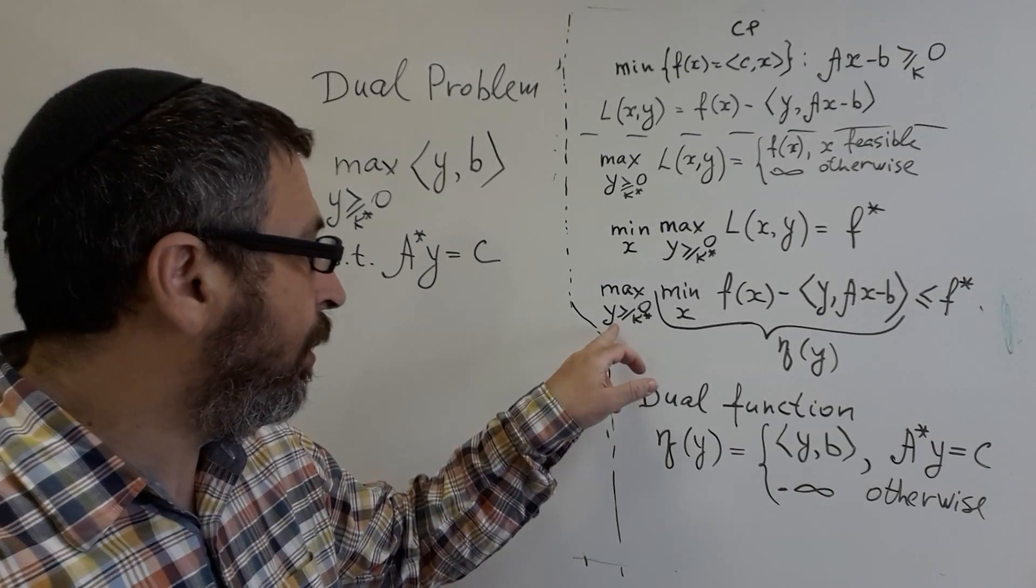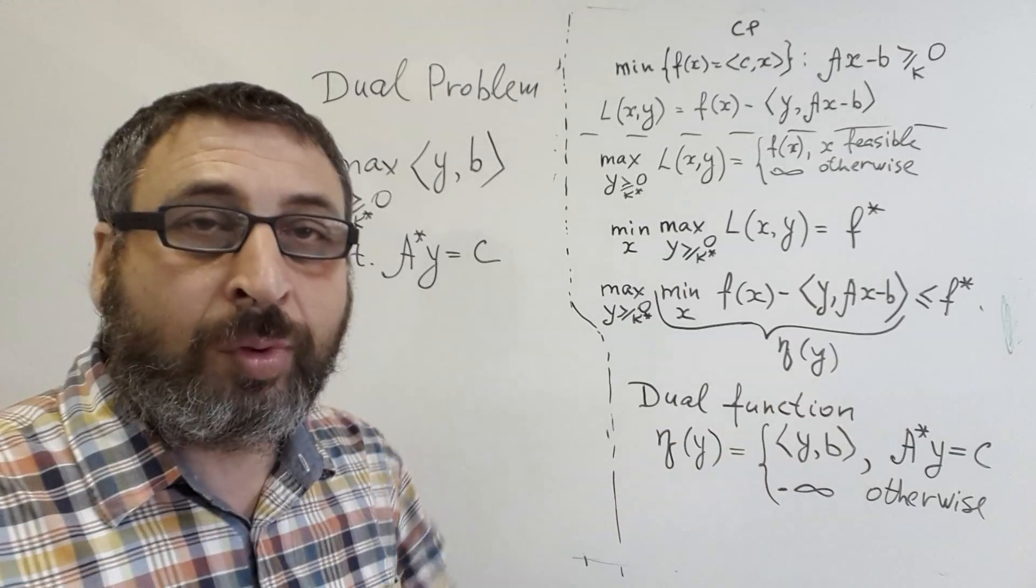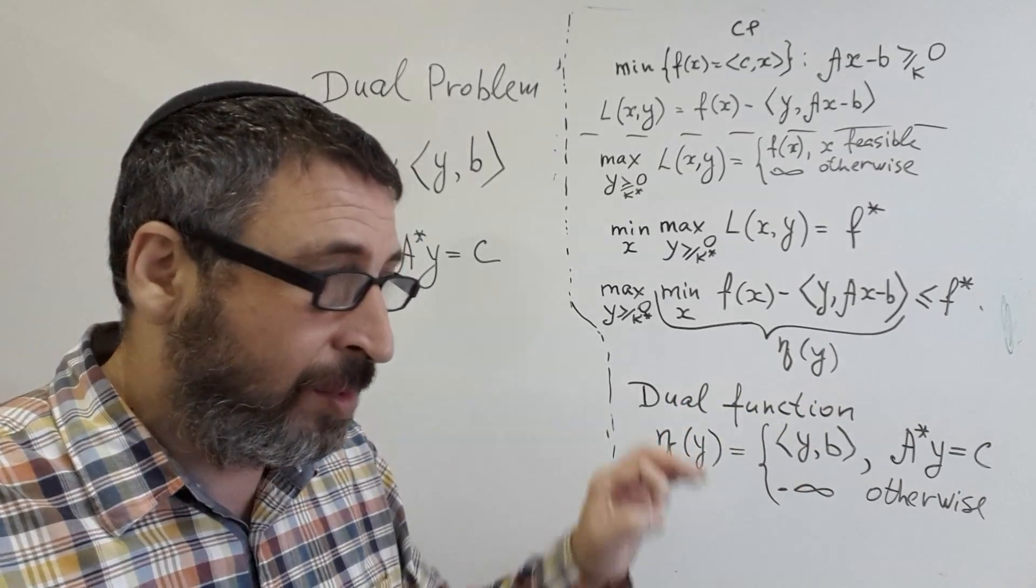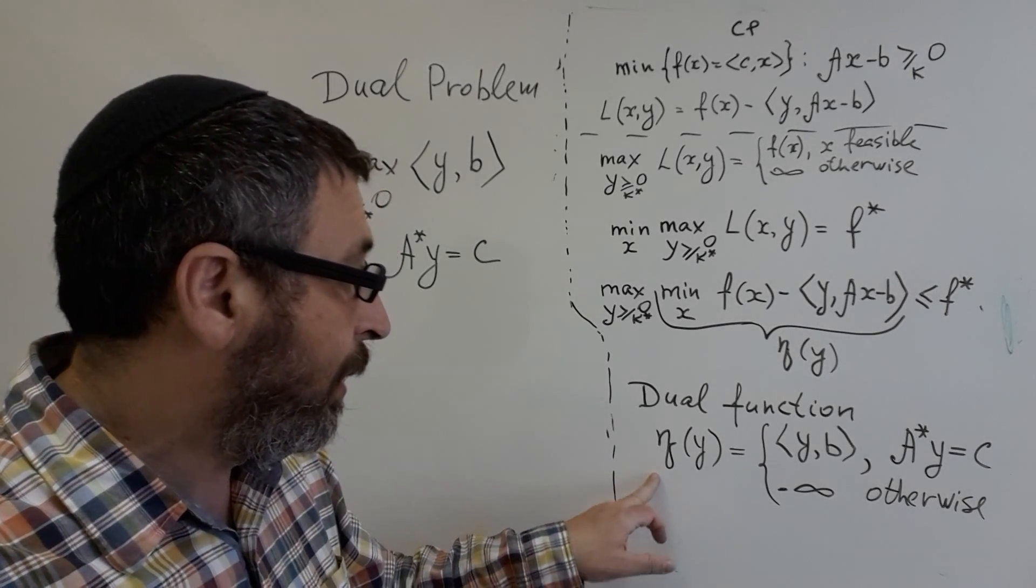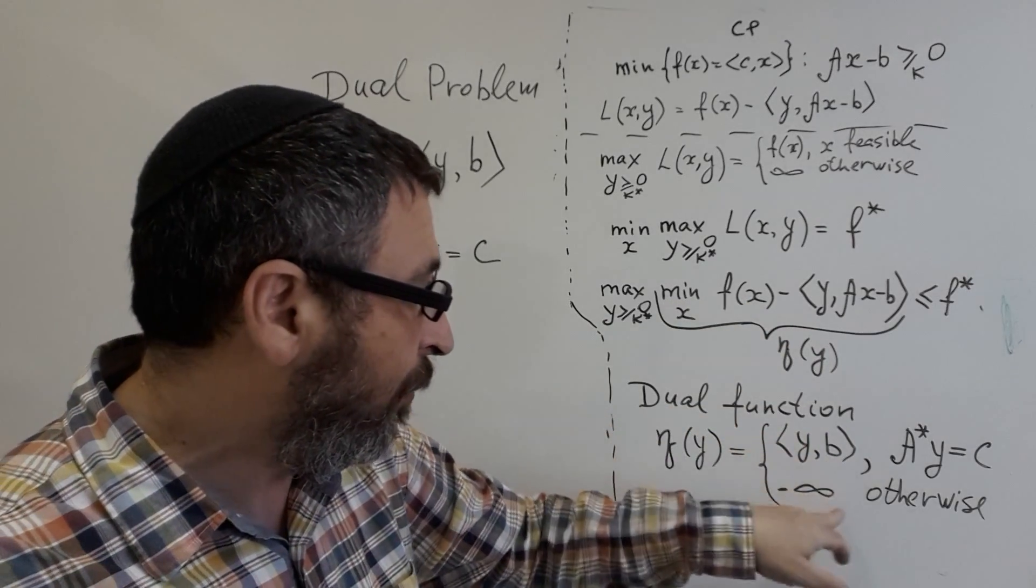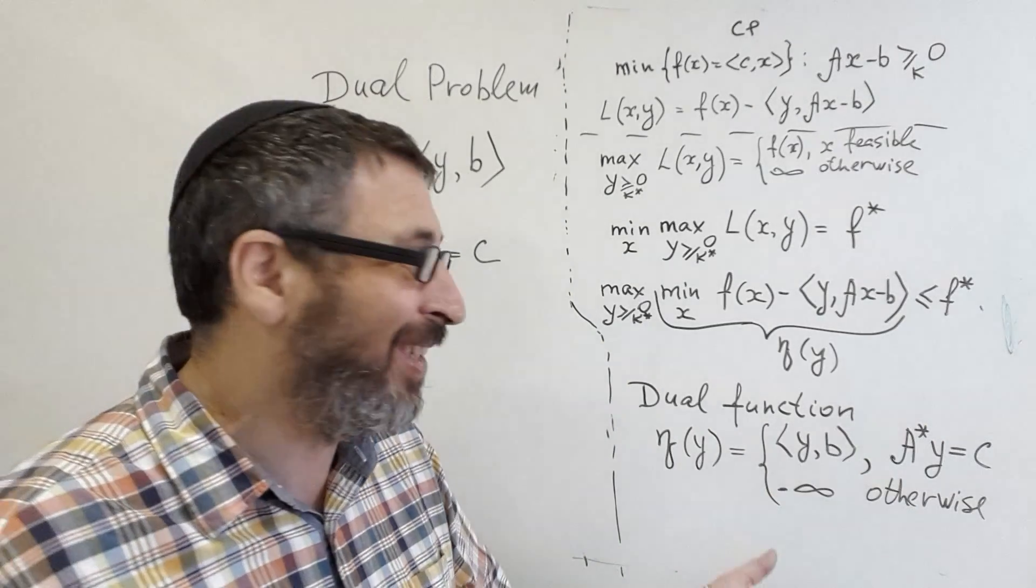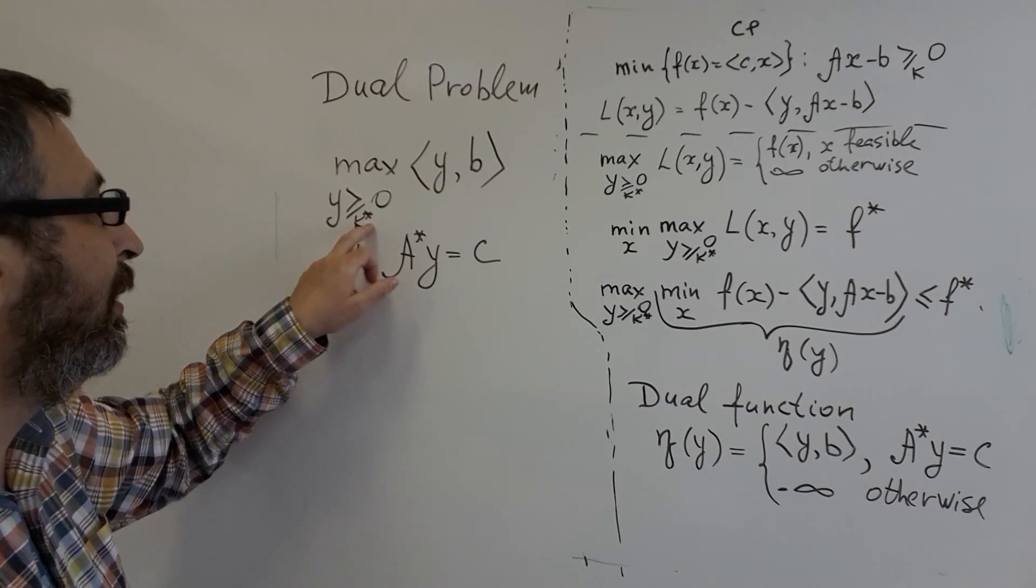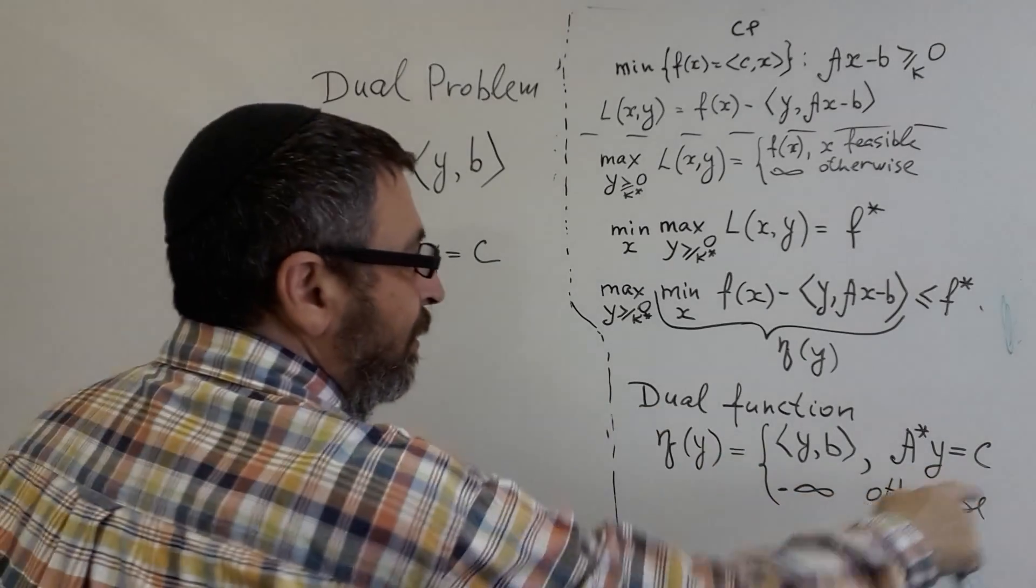So I should remind you that we want to maximize this dual function in order to obtain lower bound for our optimal solution, or maybe optimal value itself when duality is strong. So what will be maximum over y of this function? Of course some finite value larger than minus infinity will be achieved only if this constraint is satisfied. Otherwise it will be minus infinity which is smaller than other values. That's why we get the following dual problem: we should maximize over y belonging to dual cone, inner product of y with B, subject to constraint A adjoint y is equal to C.